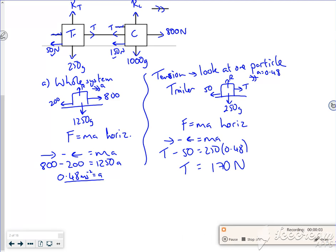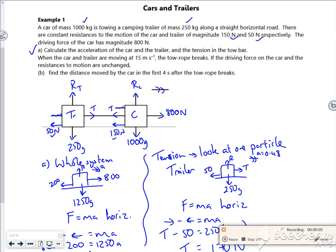And started again. So I've done part A, got acceleration and tension. So let's move on. When the car and trailer are moving at 15 meters per second, the tow rope breaks. If the driving force on the car and the resistances remain unchanged, find the distance moved by the car in the first four seconds.